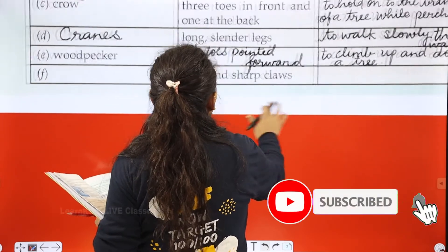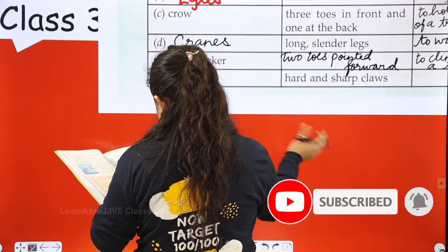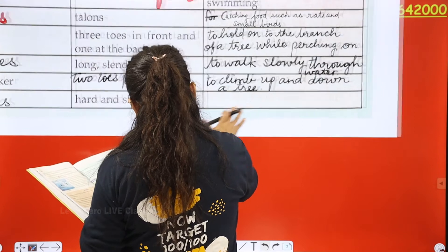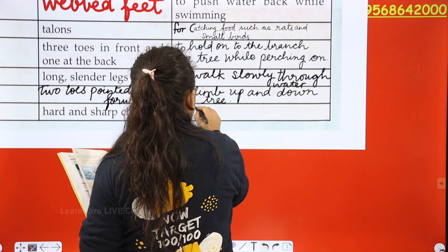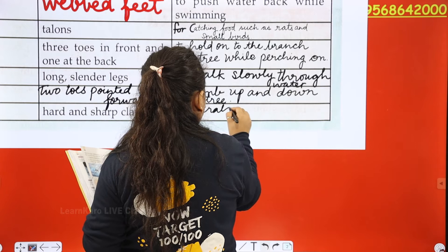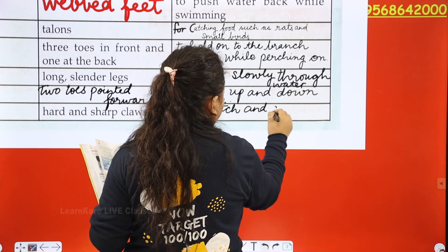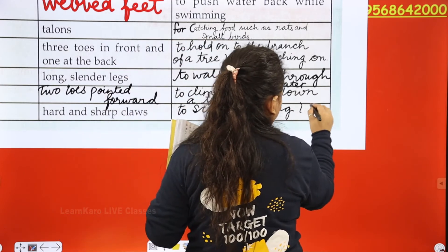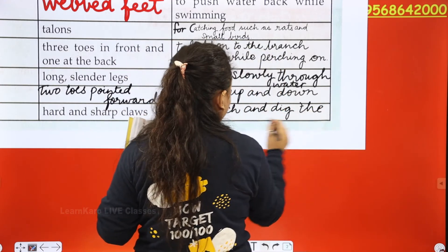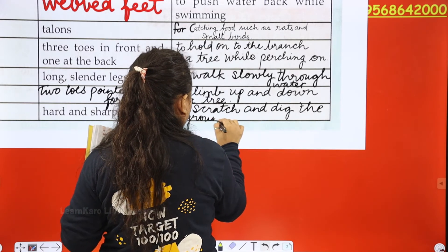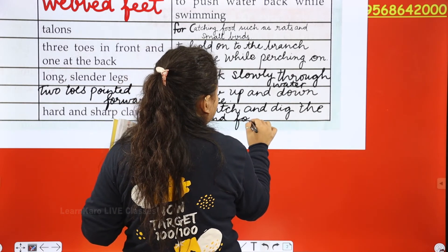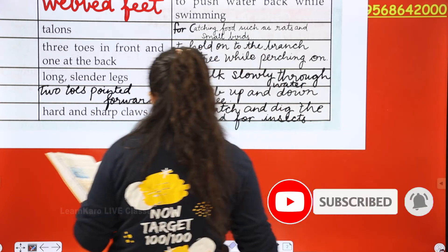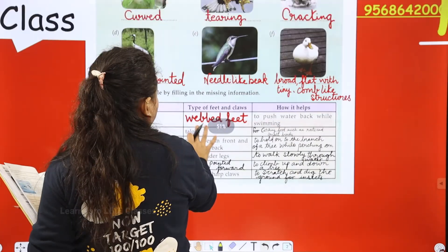Next is hard and sharp claws — belonging to hens. These claws help the bird to scratch the ground and dig for insects. The table is now complete.